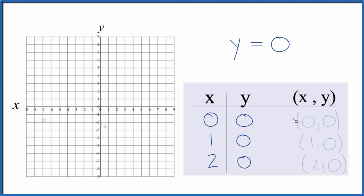So let's graph these points. We have 0, 0. That's the origin there. We have x is 1 and y is 0. We have x is 2, y is 0.